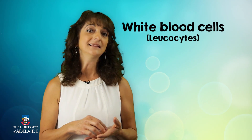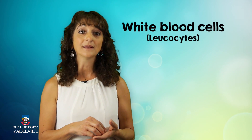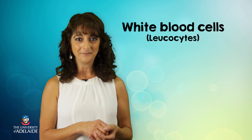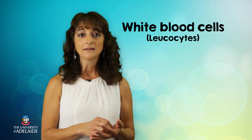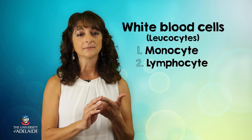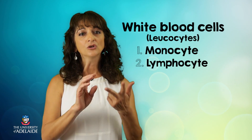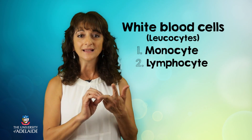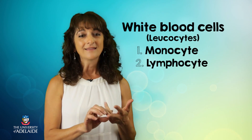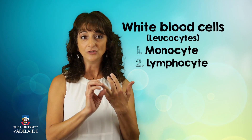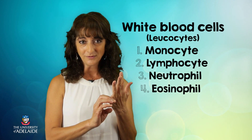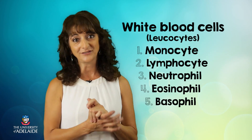There are three main types of white blood cells or leukocytes. These are the monocytes, the lymphocytes, and then a group of white blood cells whose names end in 'phil.' They are referred to as your neutrophil, your eosinophil and your basophil.